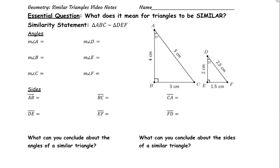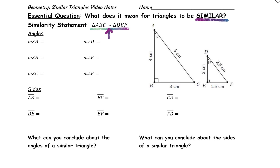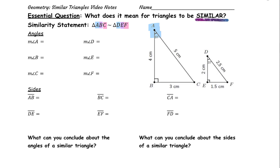What does it mean for triangles to be similar? Given the following similarity statement, triangle ABC is similar to triangle DEF. This similarity statement is super helpful because it tells us which part of one triangle corresponds to which part of the other triangle. So this similarity statement is telling us that angle A corresponds to angle D, angle B corresponds to angle E, and angle C corresponds with angle F.